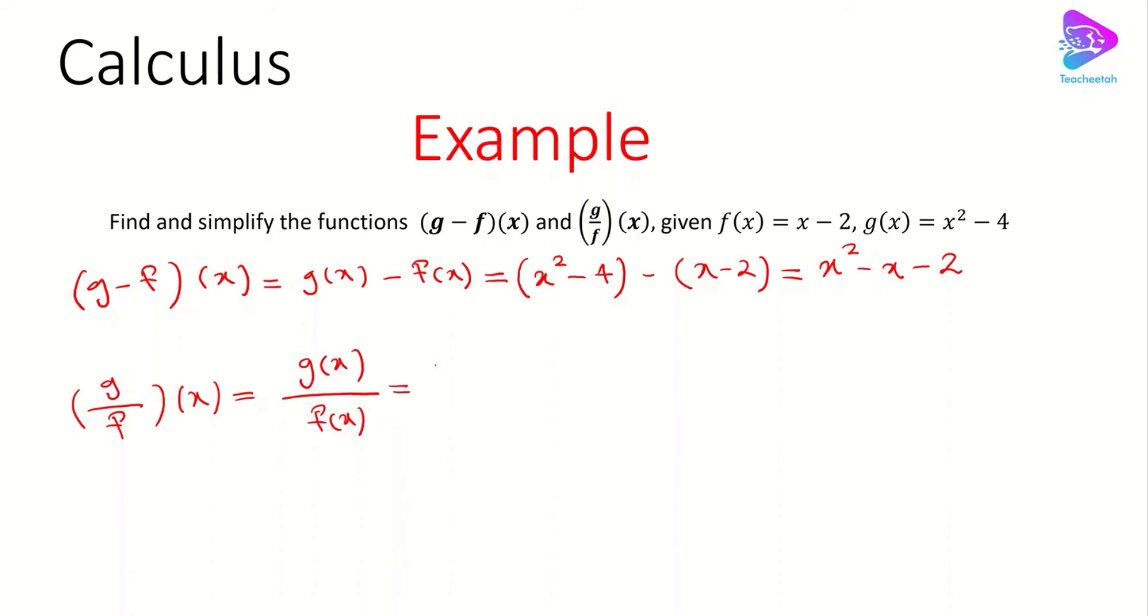We plug in g(x) = x² - 4 and f(x) = x - 2. We need to simplify (x² - 4)/(x - 2). We can factor this as (x - 2)(x + 2)/(x - 2). The (x - 2) terms cancel, and at the end we have x + 2.